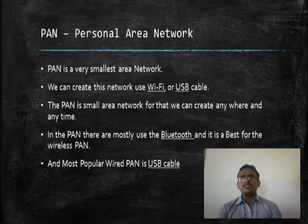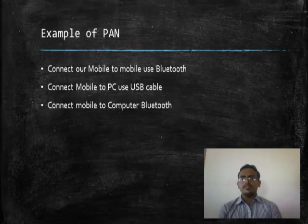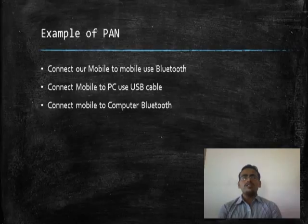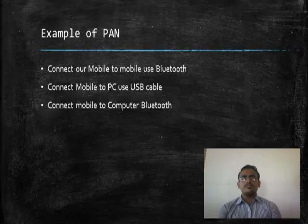Now let me see the example. The PAN example is Bluetooth — we are connecting mobile to mobile using Bluetooth, which is an example of wireless. We are also connecting mobile to the computer using Bluetooth. And we can create the network using a USB cable between a PC and mobile.